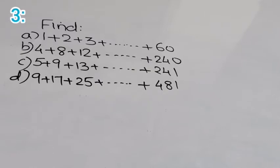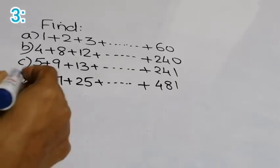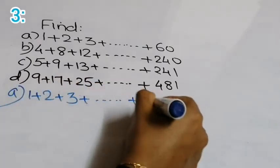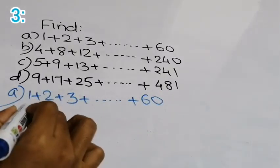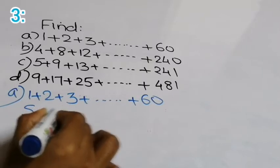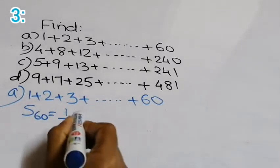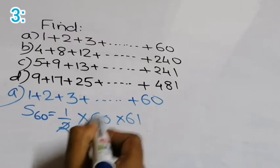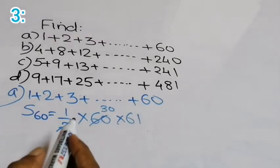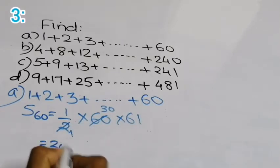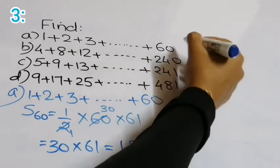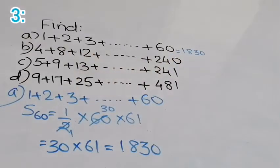Moving on to the third question — which is very interesting — it has four parts. Part A: 1 plus 2 plus 3 up to 60. These are natural numbers starting from 1, so there are 60 terms. We write directly: one-half into 60 into 61, which gives us 30 into 61 equal to 1,830.